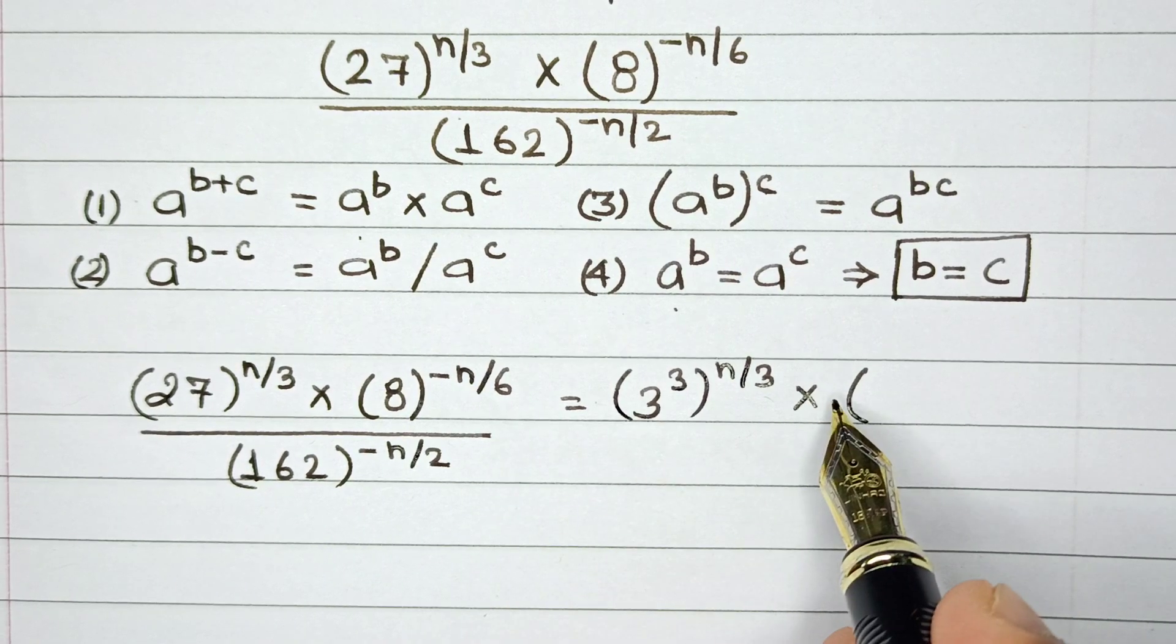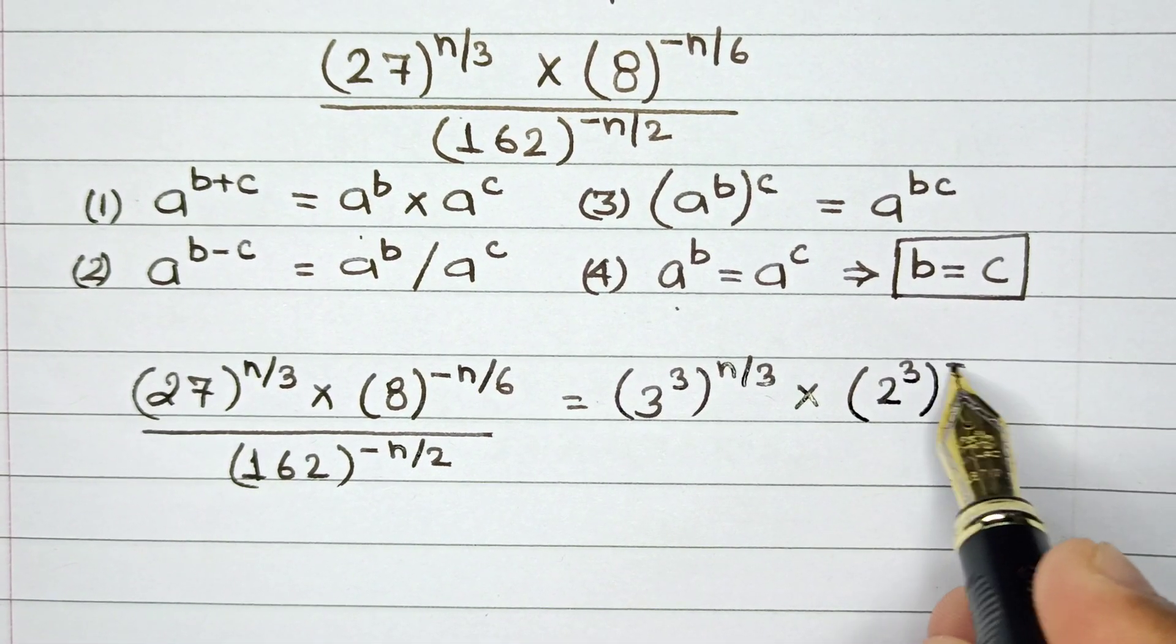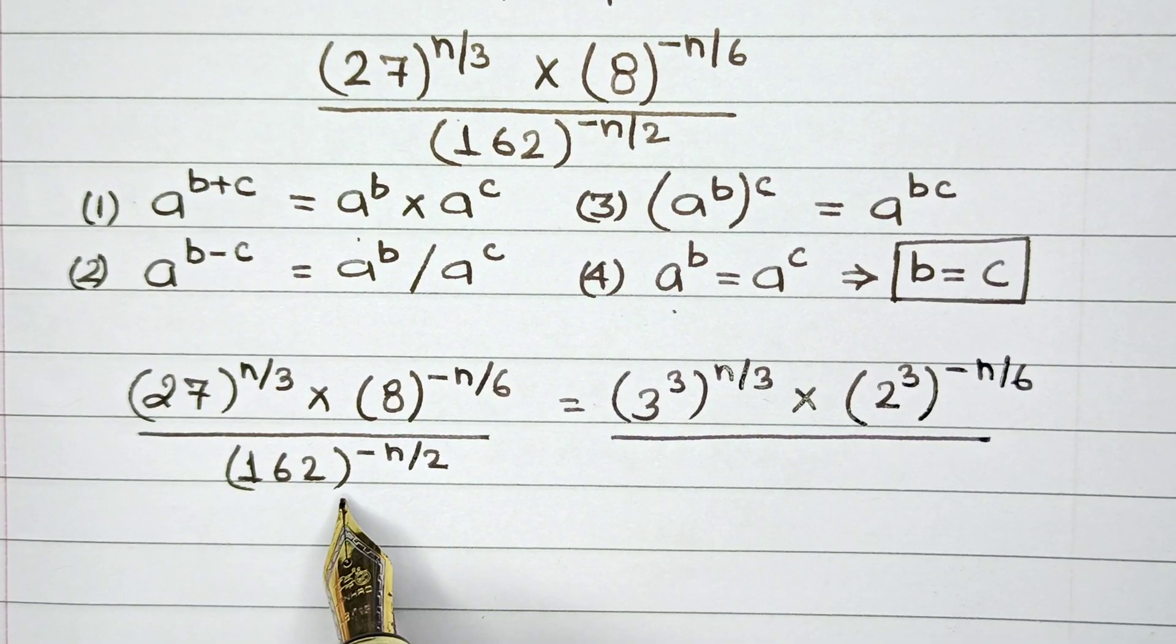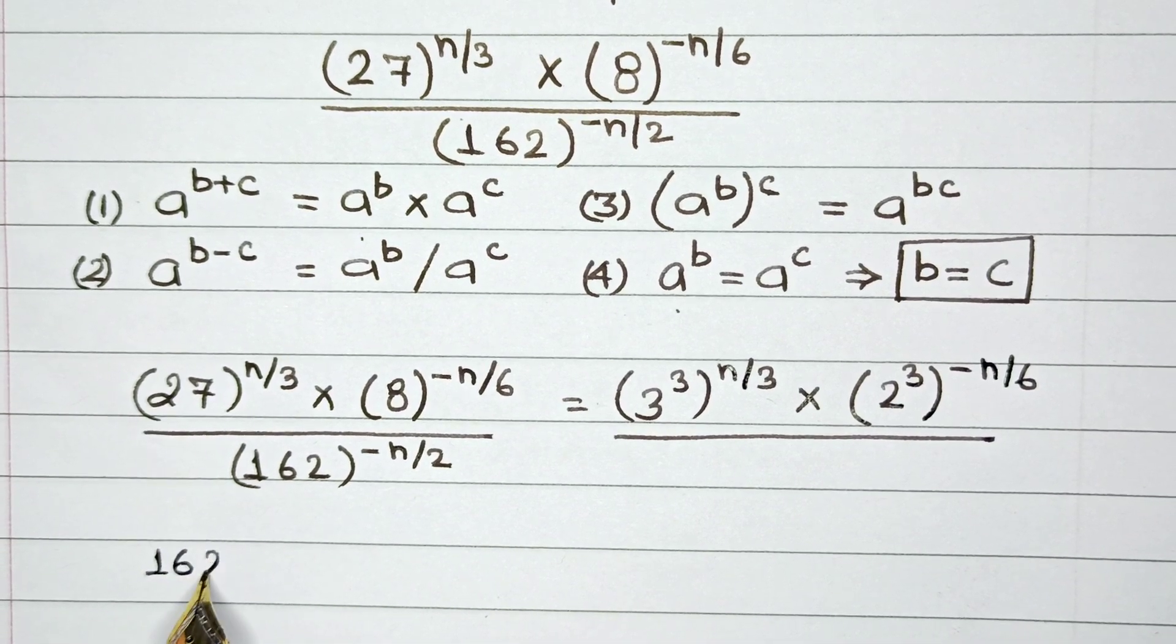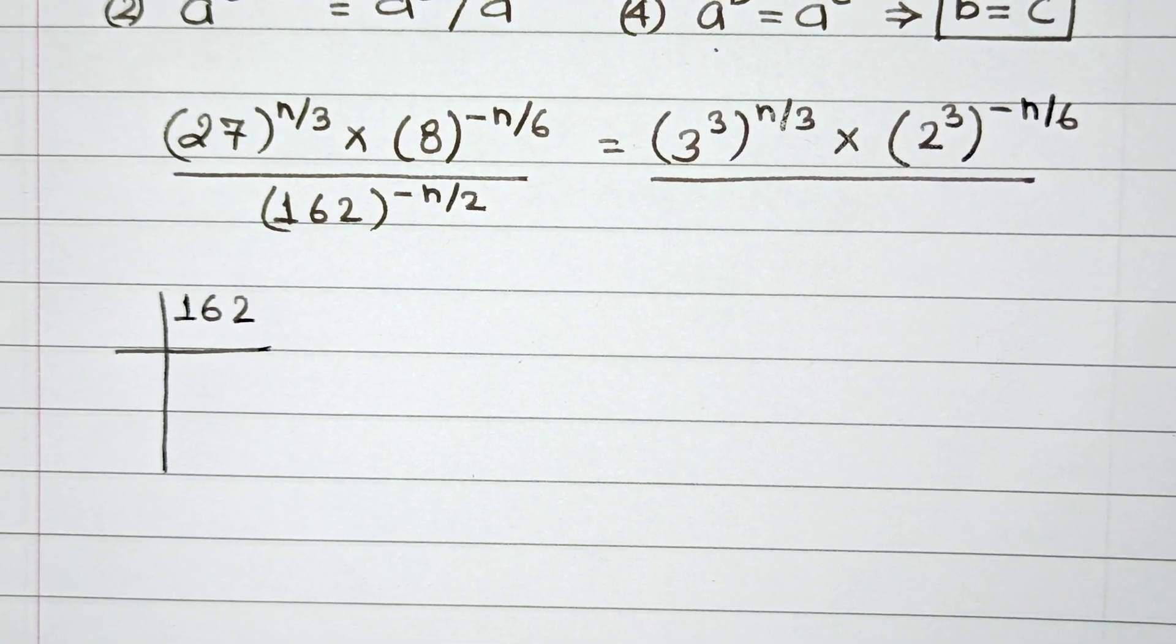This is then multiplied by 8. Now 8 can basically be written as 2 raised to the power of 3 and this would be minus of n by 6. This is then divided by 162, so if you kind of factorize 162 let me prepare the prime factorization table.